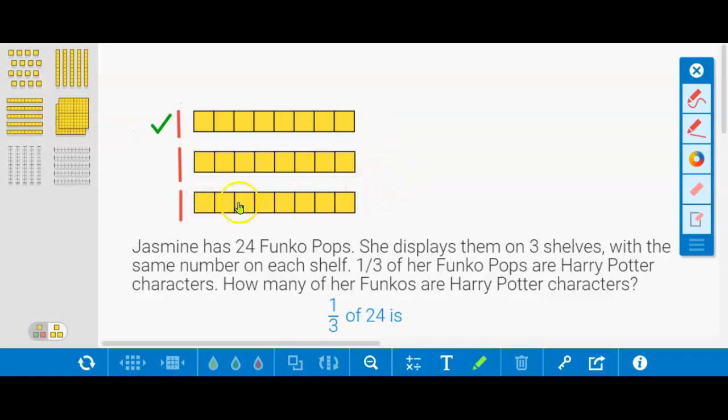But you have to double check because if you have one of these rows scooted over a little bit, you might trick yourself into thinking they're the same when they're not. So let's count.